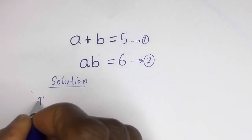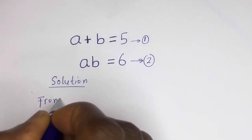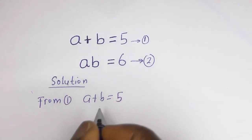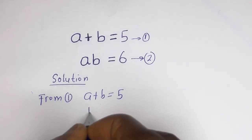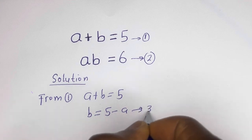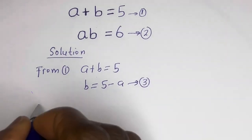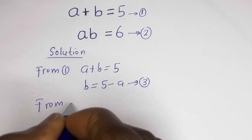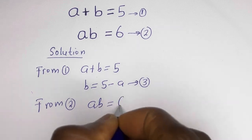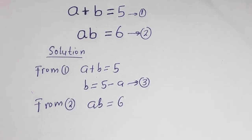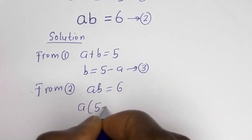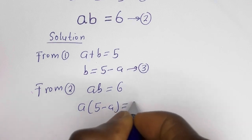From equation 1, a plus b is equal to 5, so b is equal to 5 minus a — let's call this equation 3. Also, from equation 2, a times b is equal to 6. Substituting equation 3, we have a times (5 minus a) is equal to 6.